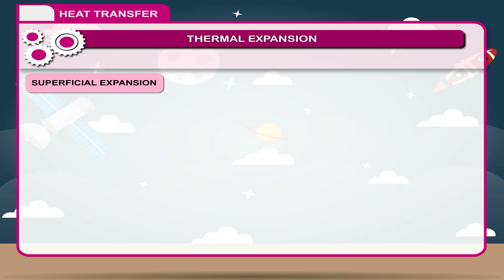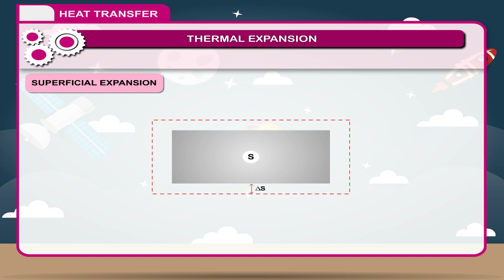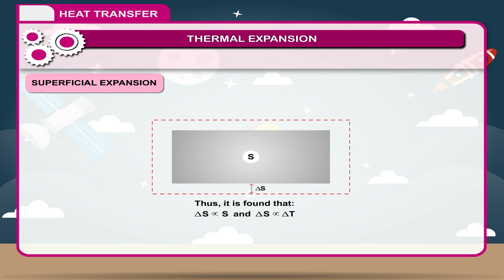Superficial expansion: Suppose S be the original surface area of a solid. Let ΔS be the small increase in surface area of the solid when its temperature is raised by a small amount ΔT. It is found that ΔS is directly proportional to S and ΔS is directly proportional to ΔT. Therefore, ΔS is directly proportional to S·ΔT.